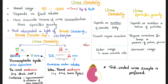Urine osmolarity could be increased in any condition that raises ADH, such as SIADH, paraneoplastic syndrome like small cell lung cancer, or even water deprivation — if I'm not drinking, ADH goes up, reabsorbs water back to the blood, leaving less water in the urine, making the urine more concentrated. Conversely, anything that decreases ADH or ADH activity — such as diabetes insipidus or excessive water intake — makes me reabsorb less water, so more water ends up in the urine, diluting it and lowering its osmolarity.